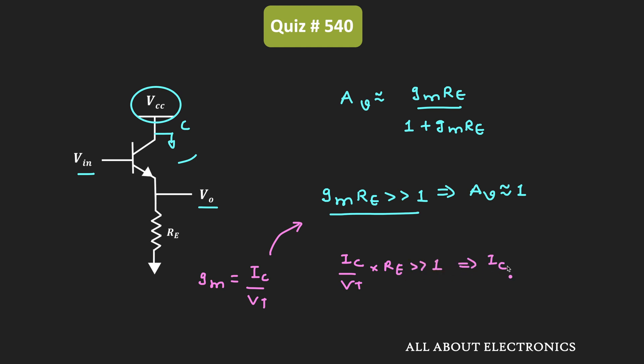Or we can say that IC times Re should be much greater than VT. So if this condition gets satisfied, then the voltage gain of this common collector amplifier is almost independent of the value of Re.